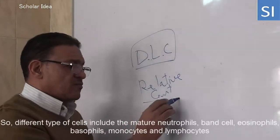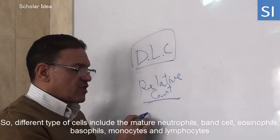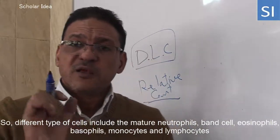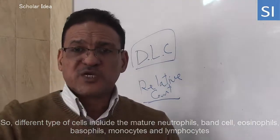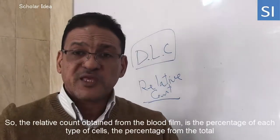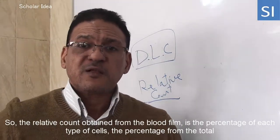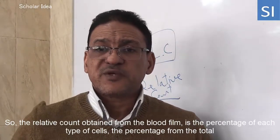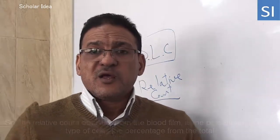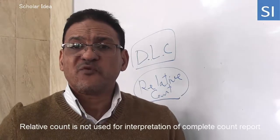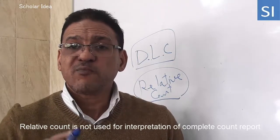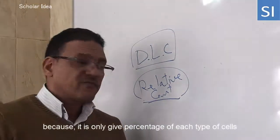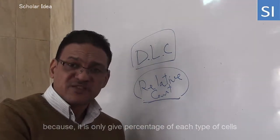The relative count covers the different types of cells including the band neutrophil, segmented neutrophil, eosinophil, basophil, monocyte, and lymphocyte — giving the relative count of each type of cell.